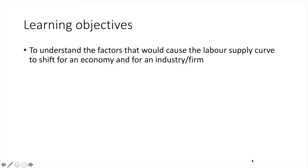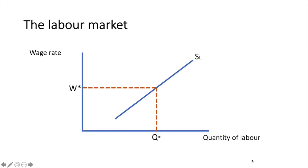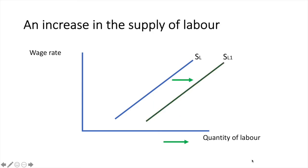In this video, we'll focus on the factors that would cause the labour supply curve to shift for an economy, and also more directly for an industry or firm. Our supply curve of labour is upward sloping, and at wage rate W star there are currently Q star units of labour supplied. An increase in the supply of labour from SL to SL1 would lead to an increase in the quantity of labour supplied at the wage rate W star.